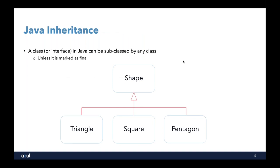The other thing we need to know about is Java inheritance. In a simple example where we have a shape class with three subclasses — triangle, square, and pentagon — from the point of view of the shape class, we have no real control over who can subclass from shape. The only thing we can do is mark it as final, meaning nobody can subclass shape. But if we don't make it final, anybody can subclass it in any way they want, and that might not be what we want.